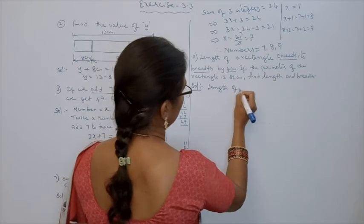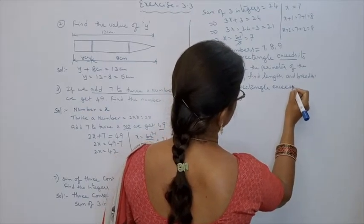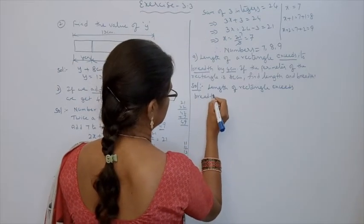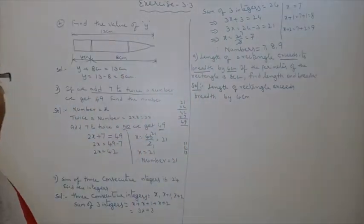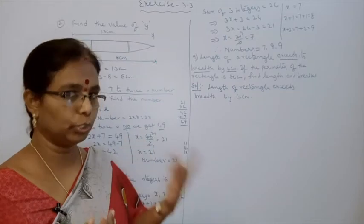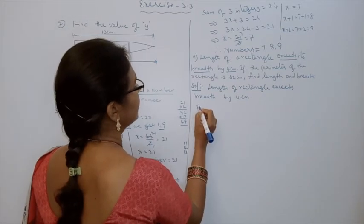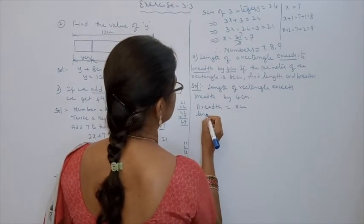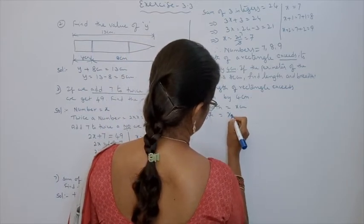Length of a rectangle exceeds breadth by 4 cm. Suppose breadth is 4, then length is 8; if breadth is 20, length is 24. The length always depends upon the breadth, so we assume breadth as x. Then length is equal to x plus 4 cm. Exceeds means more.